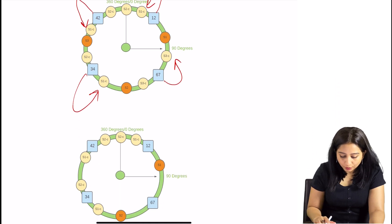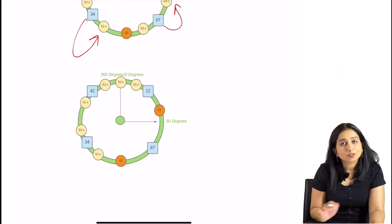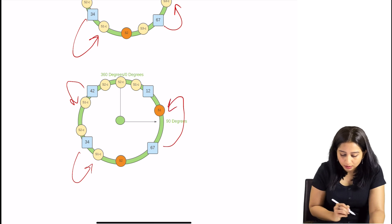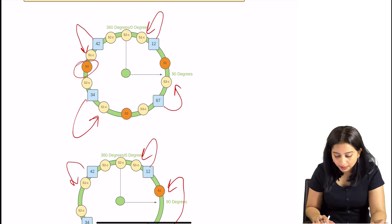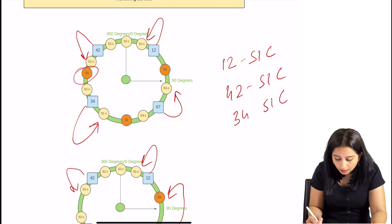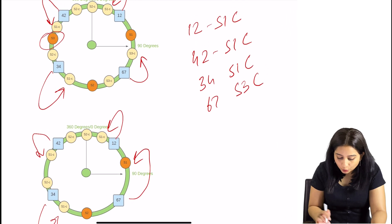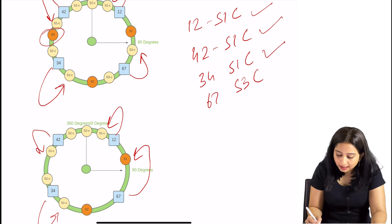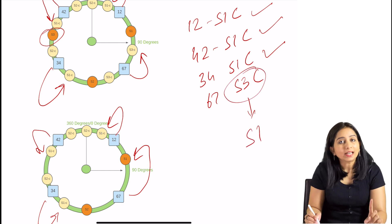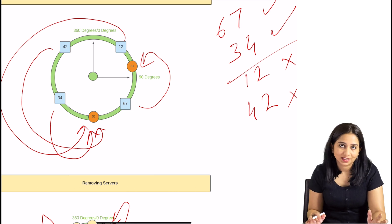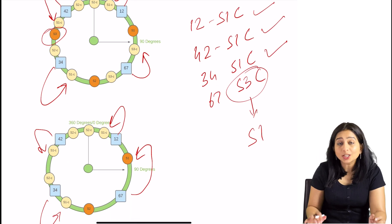Now let's say we remove S3 along with all its replicas. After removal: 42 goes to S1C, 34 goes to S1C, 12 goes to S1C, and 67 moves from S3C to S1. So only one key had to be remapped. Without replicated copies, we had to remap 50% of keys. But when using replicas, we only had to remap 25% of keys. The replicas distribute the load more evenly and minimize remapping.